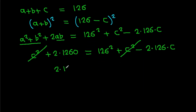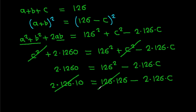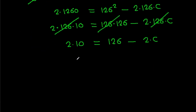So 2 times 1260 equals 126 squared minus 2 times 126 times C. This gives 2 times 1260 equals 126 times (126 minus 2C). Dividing both sides by 126, we get 2 times 10 equals 126 minus 2C, so 20 equals 126 minus 2C.